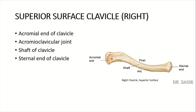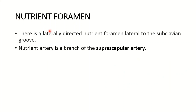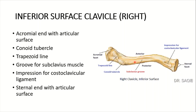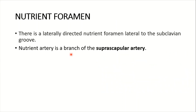On the superior surface of the right clavicle: the acromial end forms the acromioclavicular joint and the sternal end forms the sternoclavicular joint. There is also a laterally directed nutrient foramen located lateral to the subclavian groove, and its nutrient artery is a branch of the suprascapular artery.